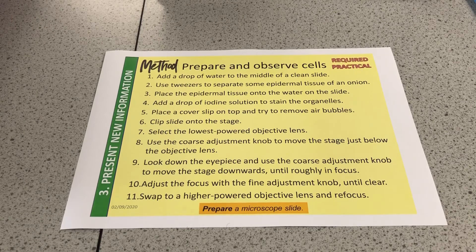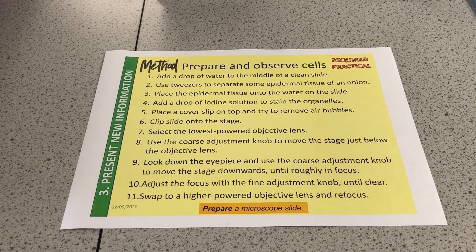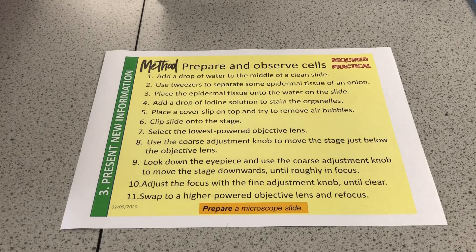Try to remove any air bubbles by giving the cover slip a small tap. Clip the slide onto the stage to keep it steady. Start with the lowest powered objective lens and use the coarse adjustment knob to move the stage just below the objective lens. Look into the eyepiece and use the coarse adjustment knob to move the stage downwards until roughly in focus, then use the fine adjustment knob until it's clear. Then increase the magnification — I had times ten in the eyepiece and times ten in the objective, so one hundred times bigger.